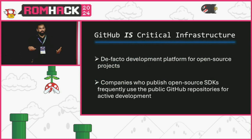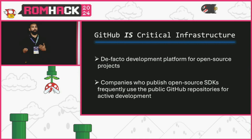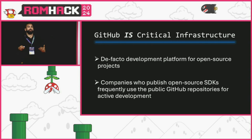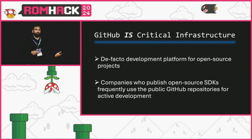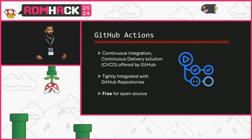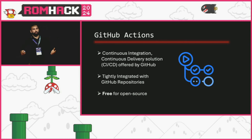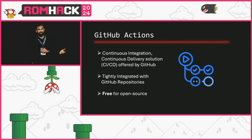This leads to the point that GitHub, for better or for worse, has become critical internet infrastructure. Open source projects around the world typically choose GitHub as their platform of choice. Large companies that publish open source software often use it for active development. GitHub Actions is a CI/CD system that GitHub offers, and if you use public GitHub repositories you can use GitHub Actions for free — that's why open source projects choose it for their tests and releases.